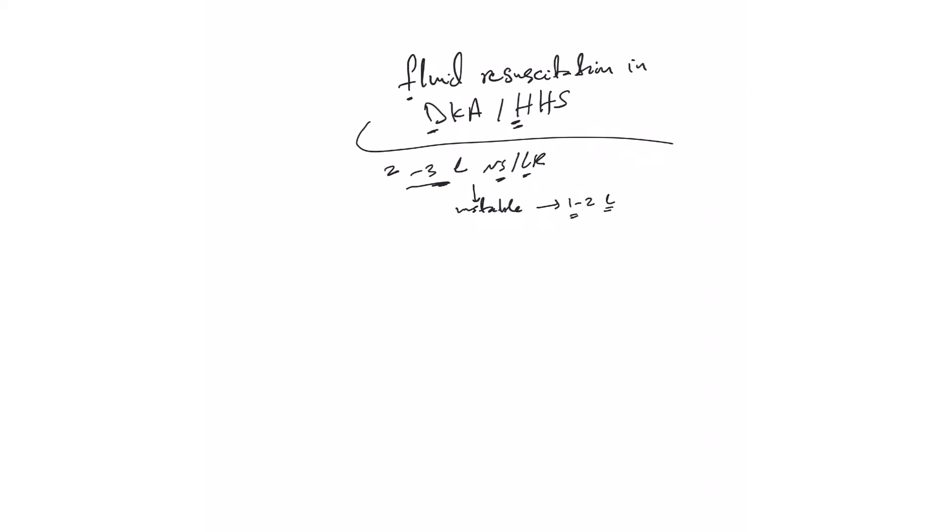Vasopressors come after that. Now, once they become stable, you check their sodium level. If they are hyponatremic, then use half normal saline at 250 to 500 ml per hour.